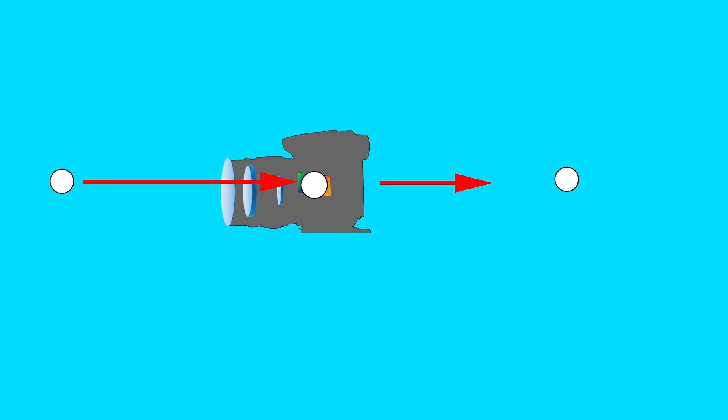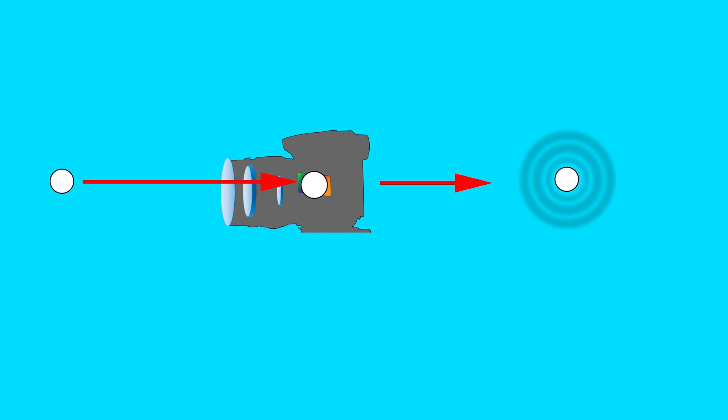Because of diffraction, there is a shadow artifact that surrounds this point of light. In fact, there is an alternating set of rings, bright and dark, and these rings with this point of light is referred to as an airy disk.